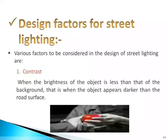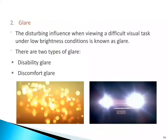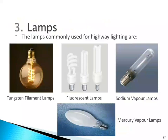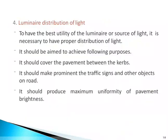Design factors for street lighting: first, contrast — when the brightness of the object is less than that of the background, meaning the object appears darker than the road surface. Second, glare — the disturbing influence when viewing a difficult visual task under low brightness conditions; there are two types: disability glare and discomfort glare. Third, lamps commonly used for highway lighting: tungsten filament lamps, fluorescent lamps, sodium vapor lamps, and mercury vapor lamps. Regarding luminaire distribution of light: to have the best utility of the light source it is necessary to have proper distribution; it should cover the pavement between the curbs, make prominent traffic signs and other objects on the road, and produce maximum uniformity of pavement brightness.